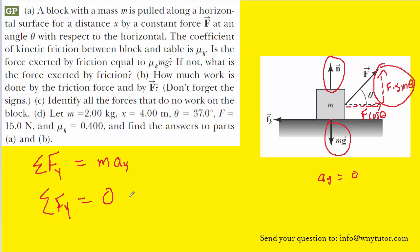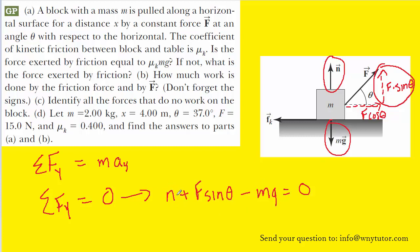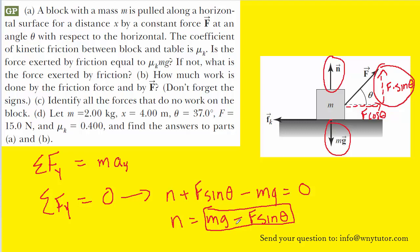Taking the sum of the forces in the y direction, we write out the equation. Notice that for mg we include a negative sign because that force is pointing downward. Now let's solve this for the normal force, which will be useful when we calculate the kinetic frictional force. We add mg to both sides and subtract F sine theta, giving us our expression for the normal force.